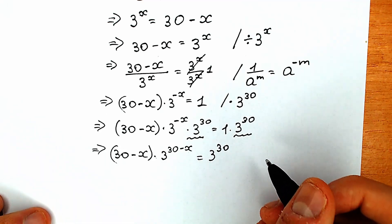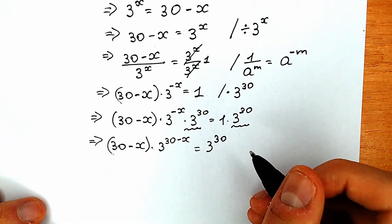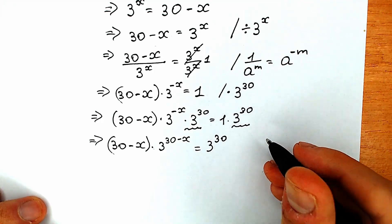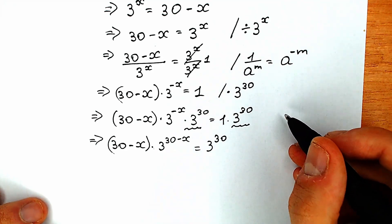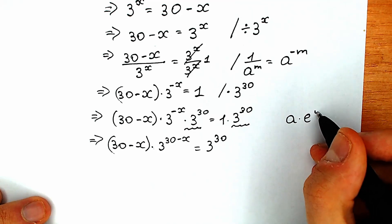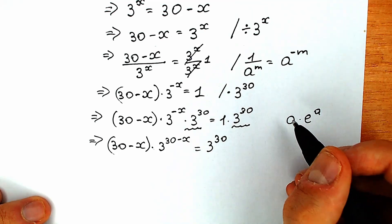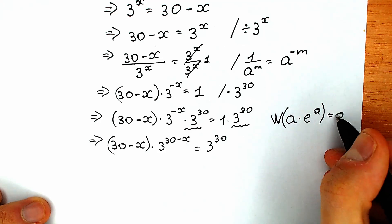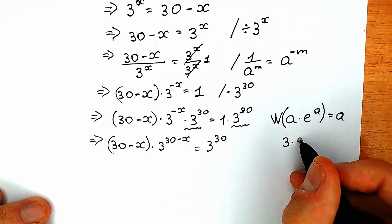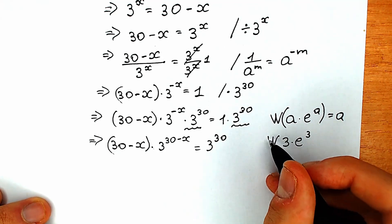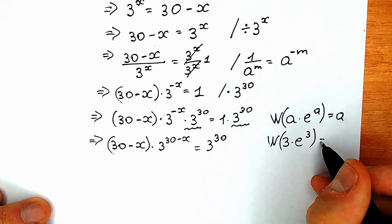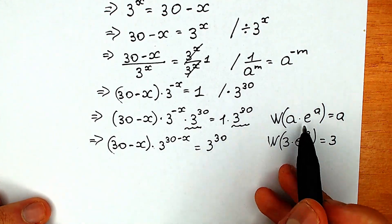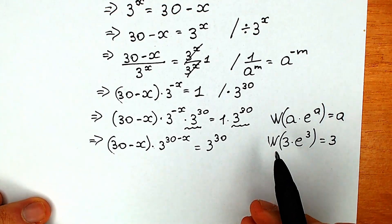Right now we need to remember the Lambert W function. For those who don't know: when we have a times e to the power a, and we apply the Lambert W function to that expression, the result is just a. For example, W(3 times e to the power 3) equals 3. But we need to have e and the same expressions on both sides.